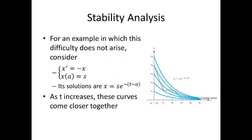For an example in which we don't get this difficulty, consider x prime is equal to minus x and x of a is equal to s. These solutions are x times s e to the minus t minus a, and as t increases, these curves come closer and closer together. Errors made in the numerical solution here will still result in selecting the wrong curve, but the effect is not as serious because curves coalesce.